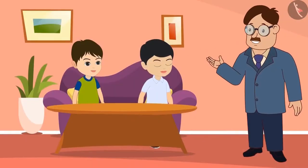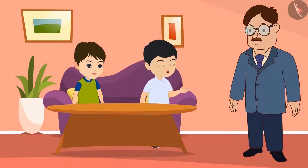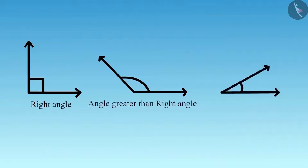Okay, tell me about the angles you know. Uncle, we know about three types of angles: right angle, angles greater than right angle and angles less than right angle.